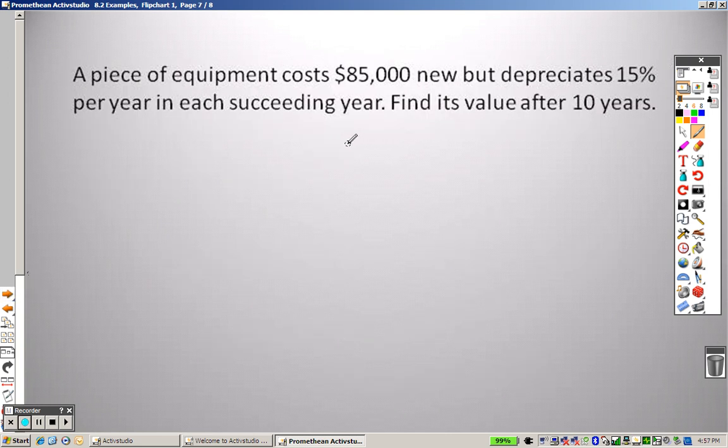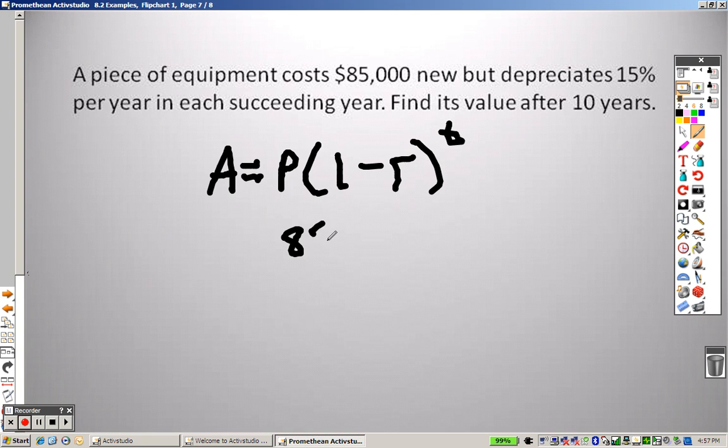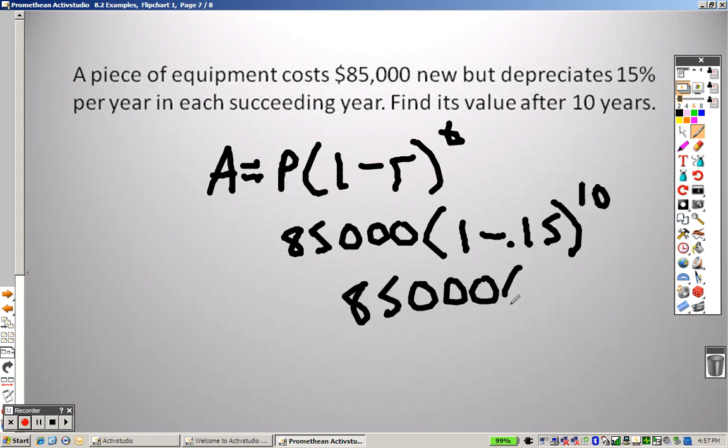A piece of equipment costs $85,000 new, but depreciates at 15% per year. So, same formula, A equals P times 1 minus R to the T. $85,000 goes there, 1 minus 0.15, and T is 10. So this is 85,000 times 0.85 to the 10.